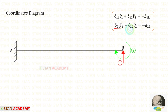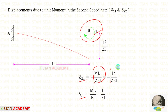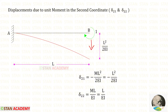Now let us find delta 21 and delta 22. For that we apply a unit moment in the second coordinate direction, which is the clockwise direction of MB. For a cantilever with a couple moment acting at the free end, the deflection formula is ML² upon 2EI; with M equal to 1 we get L² upon 2EI. The slope formula is ML upon EI; with M equal to 1 we get L upon EI. The deflection delta 21 will be negative and the slope delta 22 will be positive.